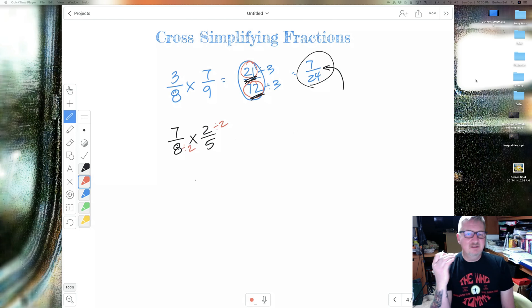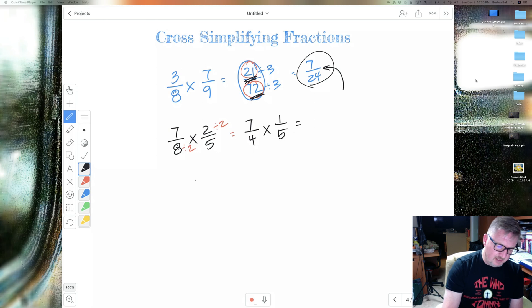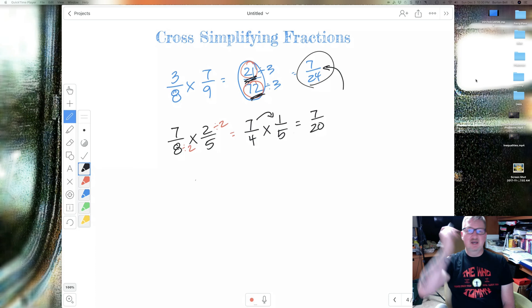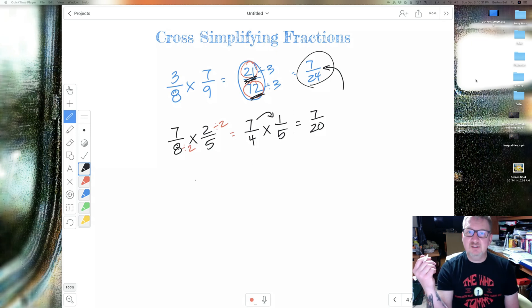Now, you've got to do both. You've got to divide the numerator and the denominator that you're working with by the same number. So I'm going to rewrite this 7 over, what's 8 divided by 2, 4 times 2 divided by 2 is 1 over 5. And then I just multiply. 7 times 1 is 7. 4 times 5 is 20. And guess what? My answer is already simplified. I don't have to fool with it anymore.